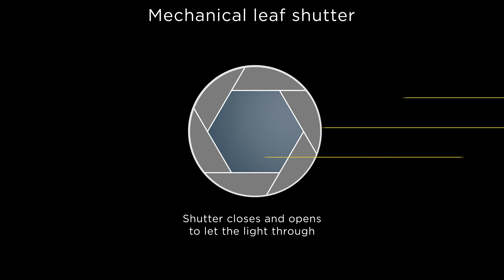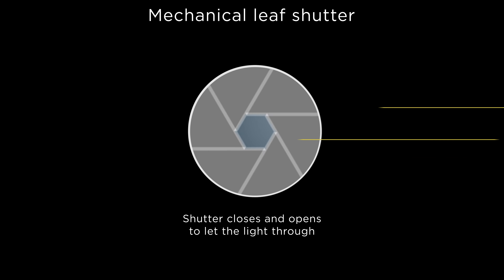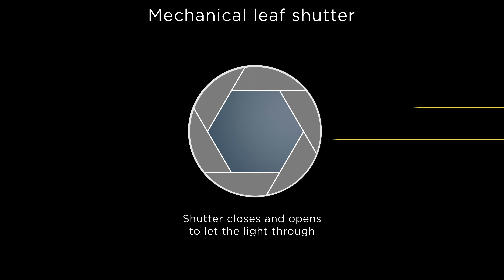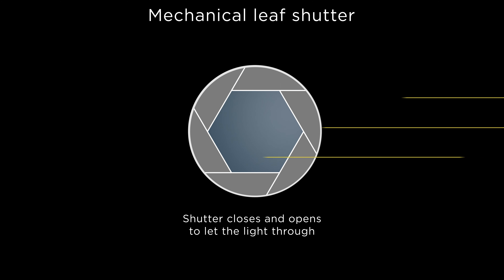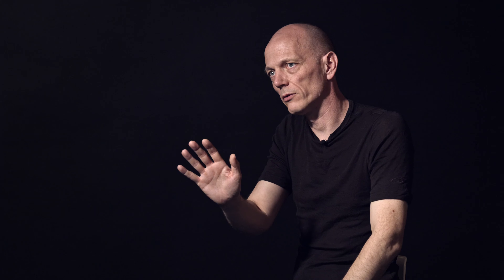A mechanical leaf shutter is a shutter mechanism placed centrally in the lens, just next to the aperture, and this enables it to block the light across the entire image plane at the same time. This ability to control the light across the entire image plane simultaneously makes it a type of mechanical global shutter, and it does not have any of the rolling effect of the focal plane shutter.